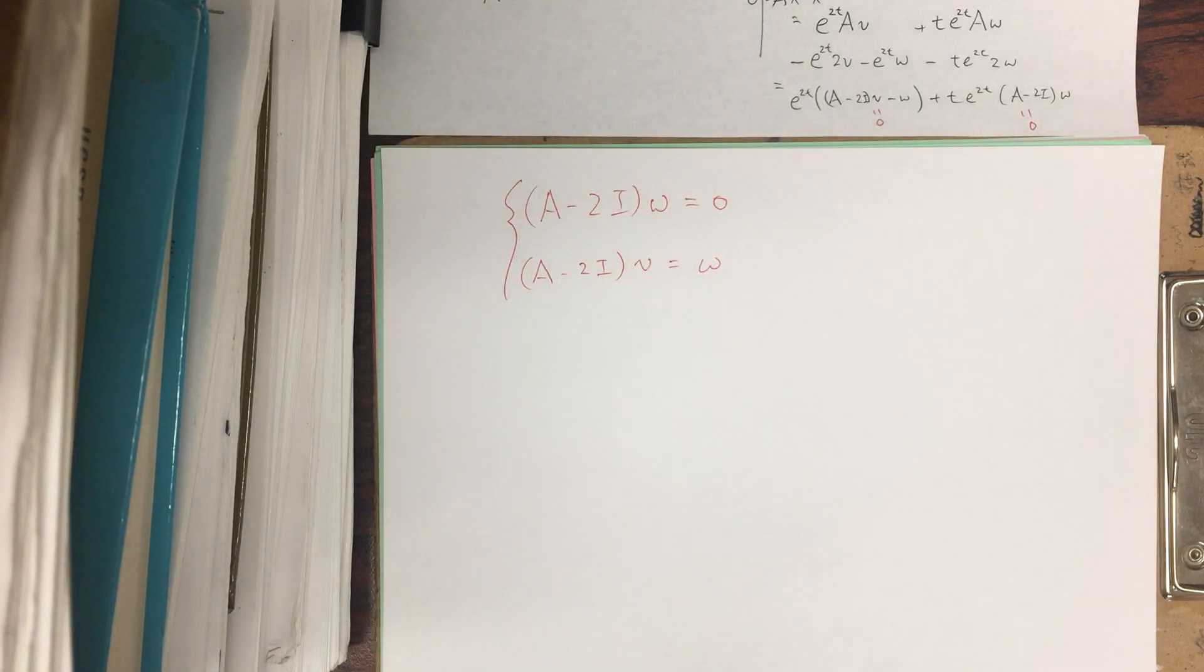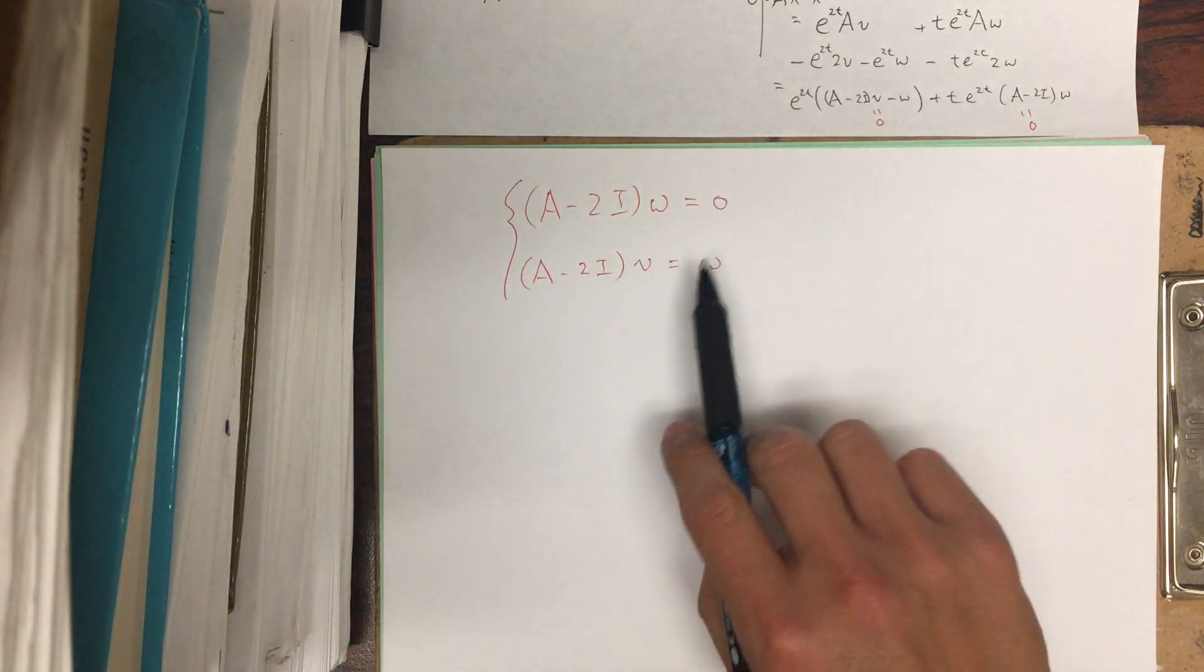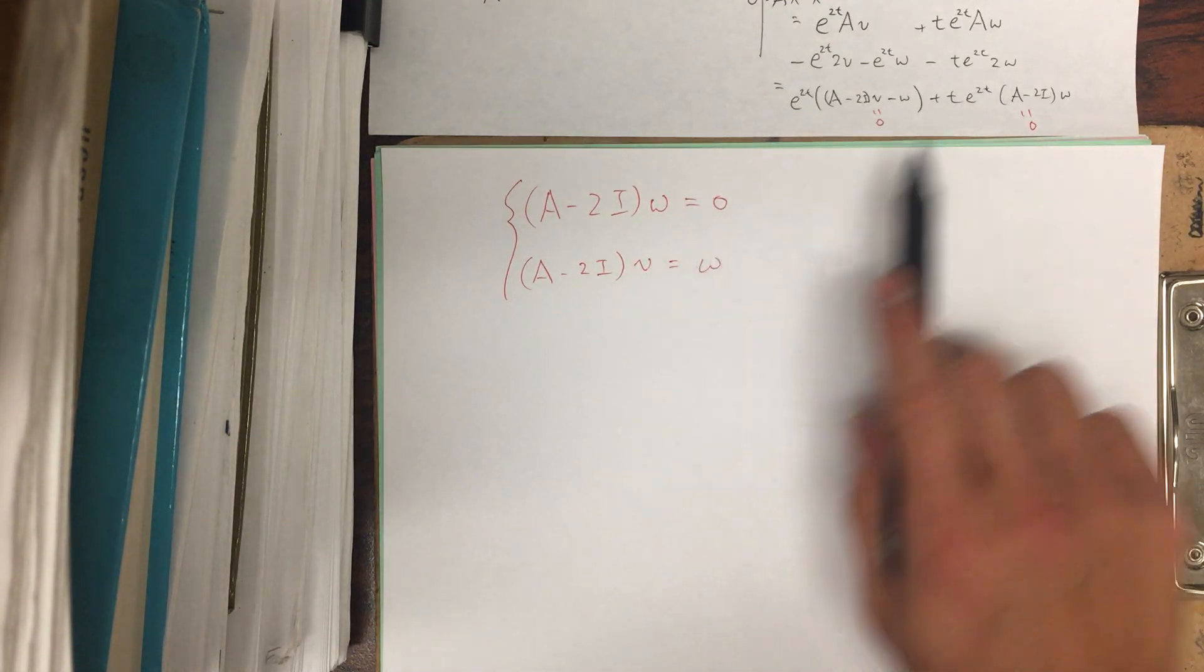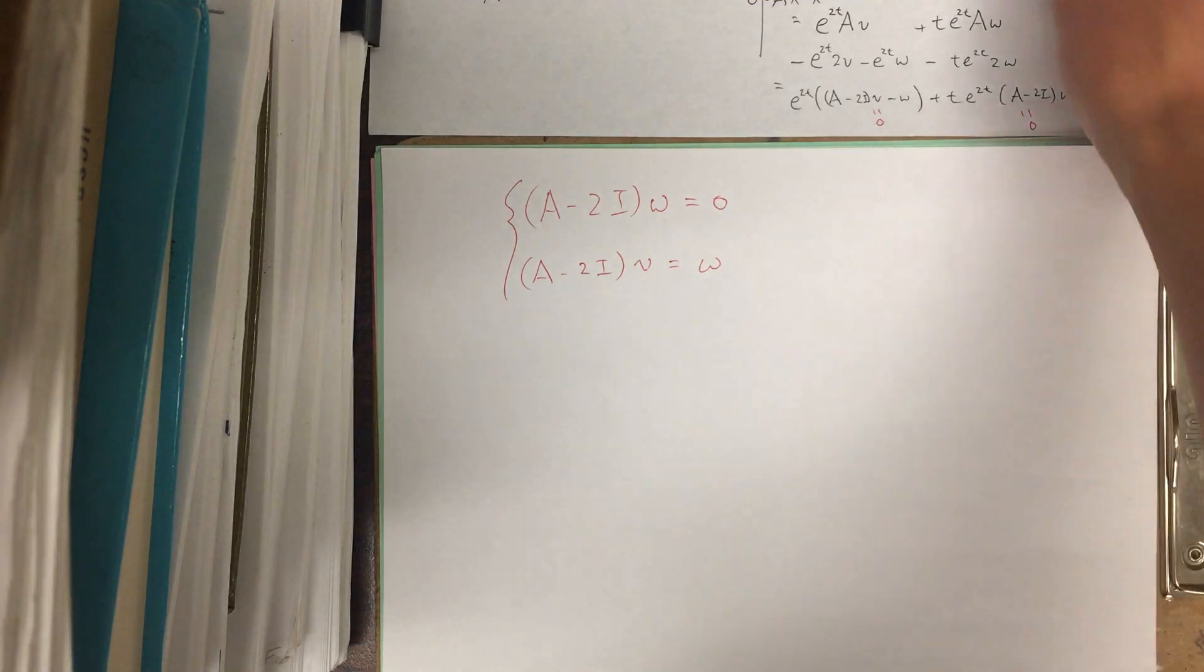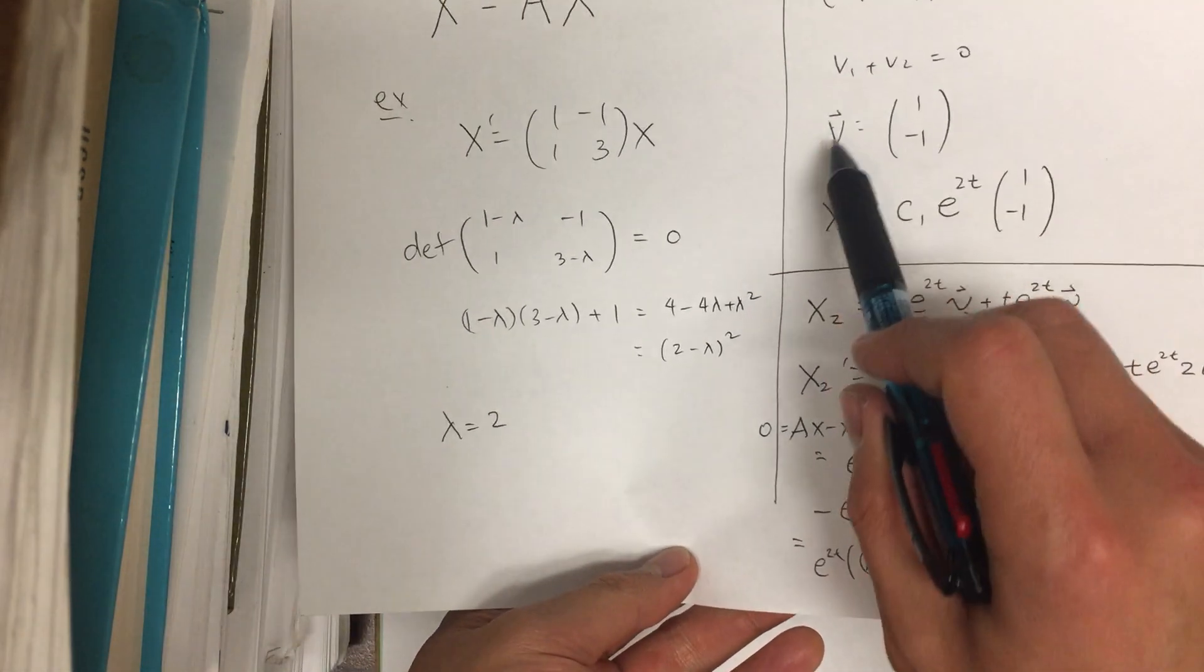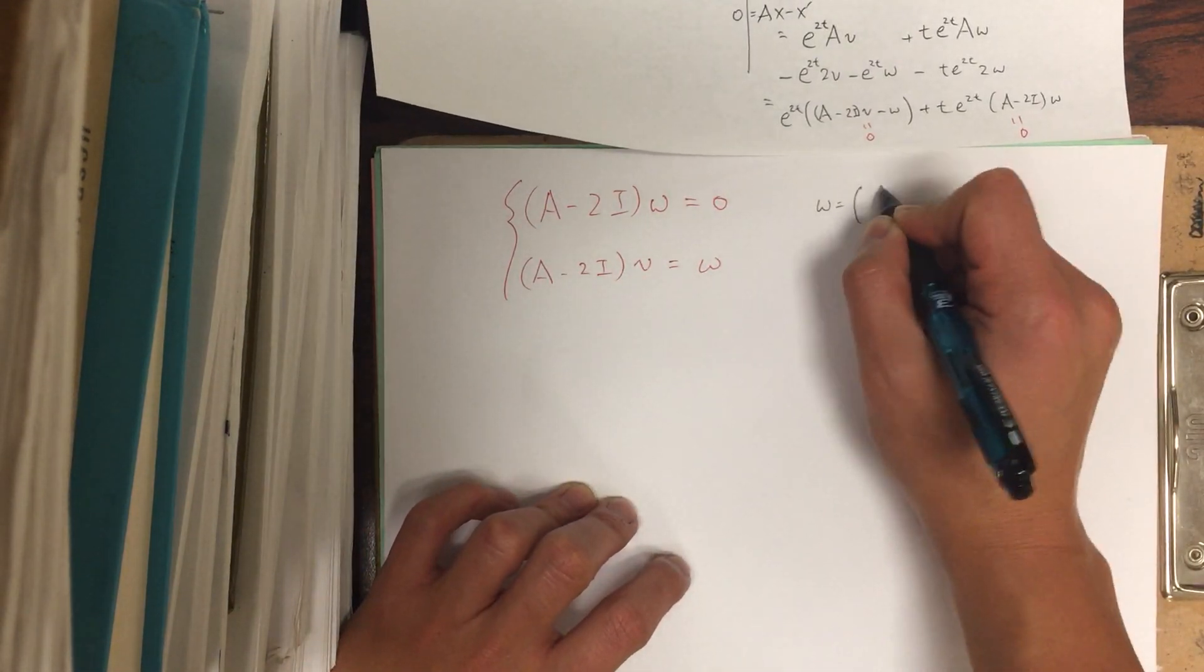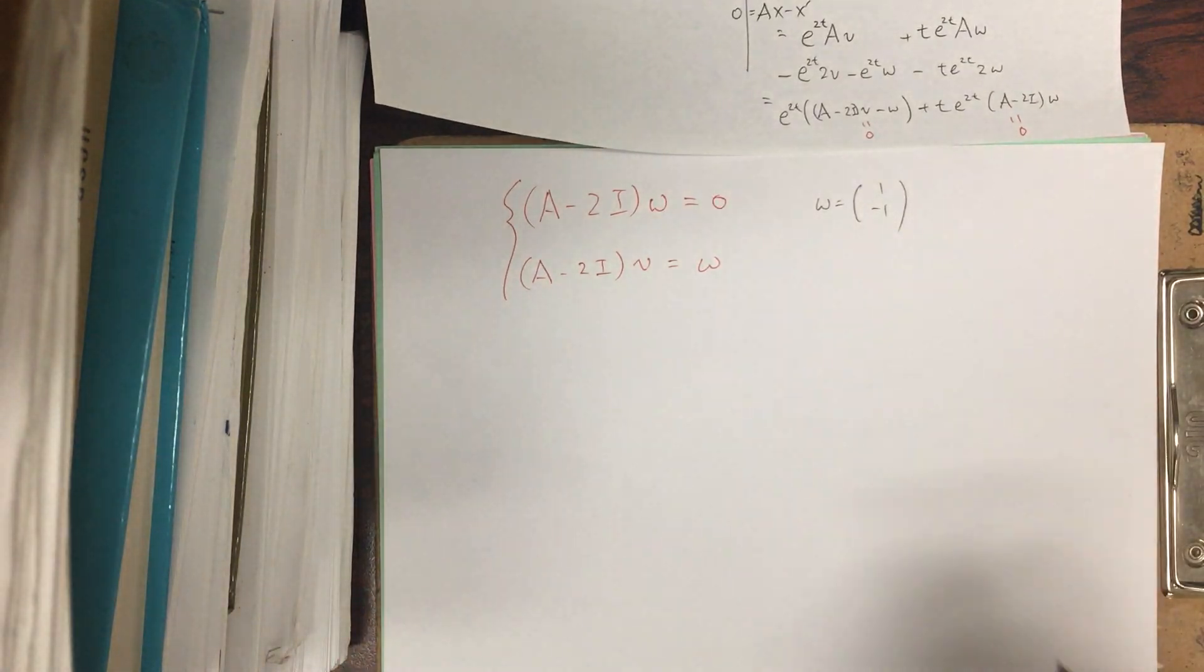Okay. Now, you don't actually have to do that much work, because the first one, w, this is an eigenvector. So we just use the eigenvector that we computed before. So, yeah, I guess I made a mistake. I should have used w, but oh well. So we know that w is [1, -1].